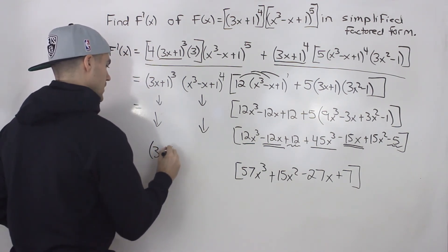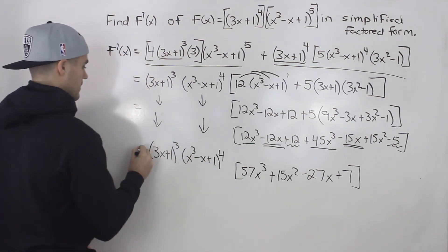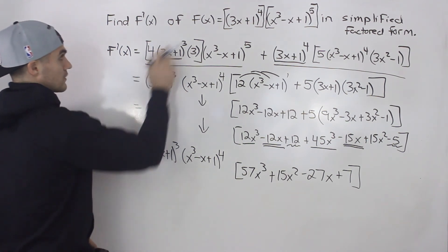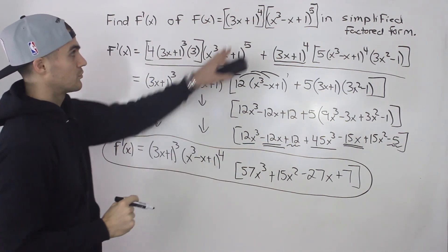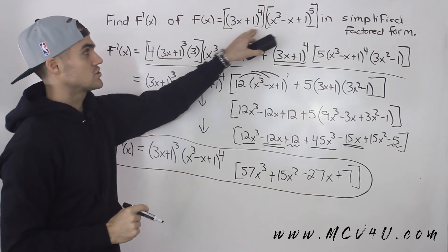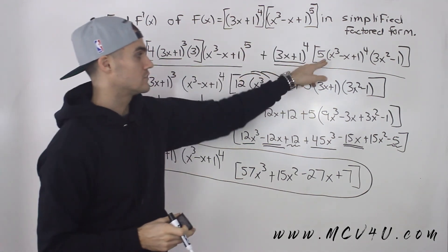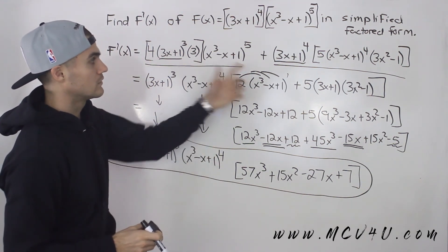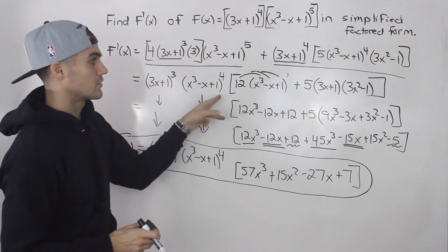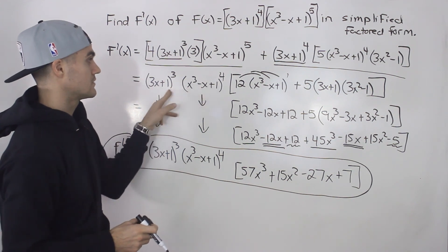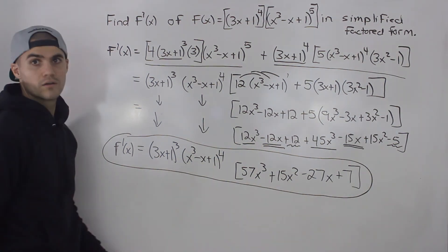Bringing down the common factors, the final simplified derivative is (3x plus 1)^3 times (x cubed minus x plus 1)^4 times (57x cubed plus 15x squared minus 27x plus 7). It's a long process: first apply the product rule, then the chain rule for each composite function, then factor out common brackets, and finally simplify the remaining bracket.